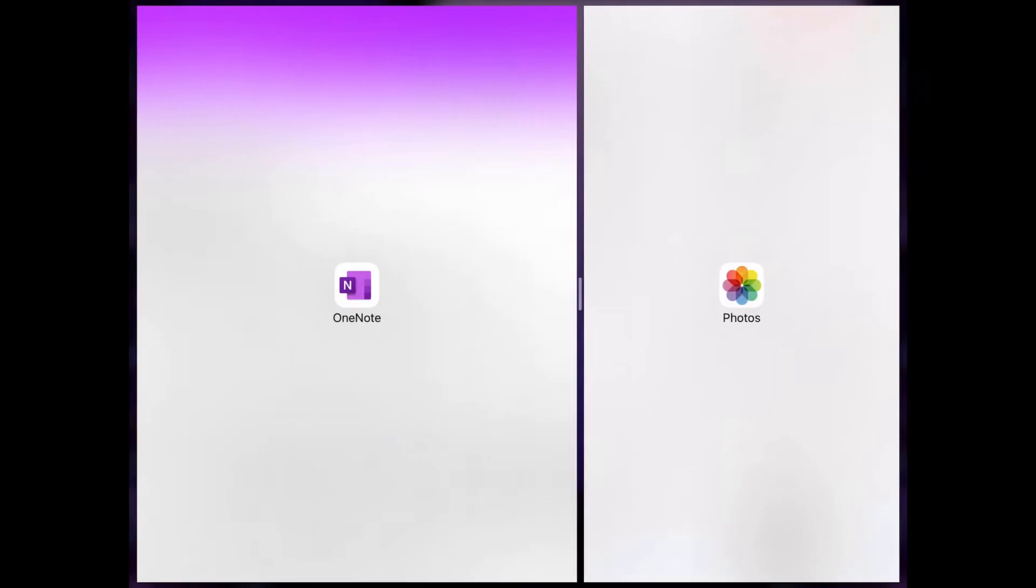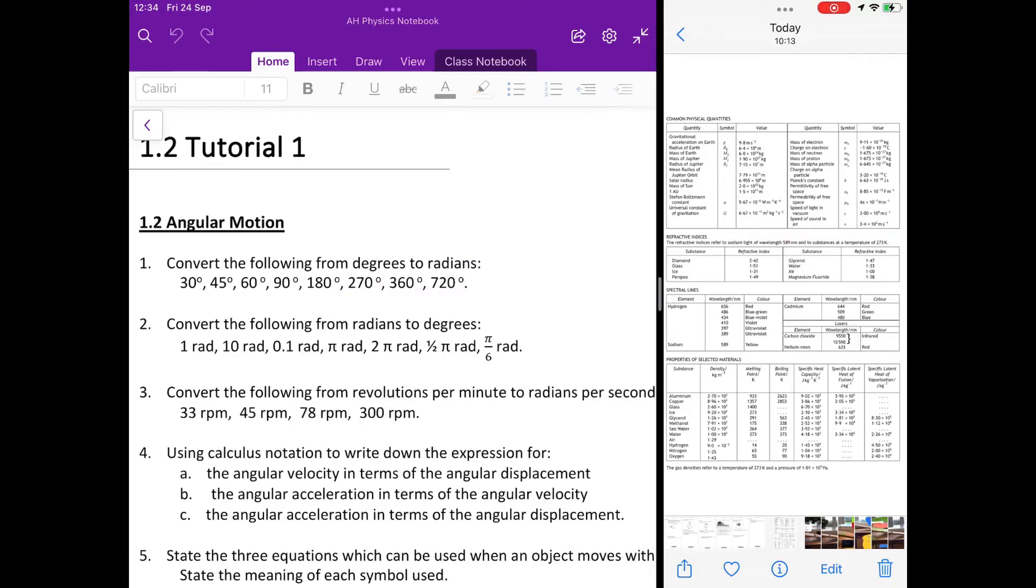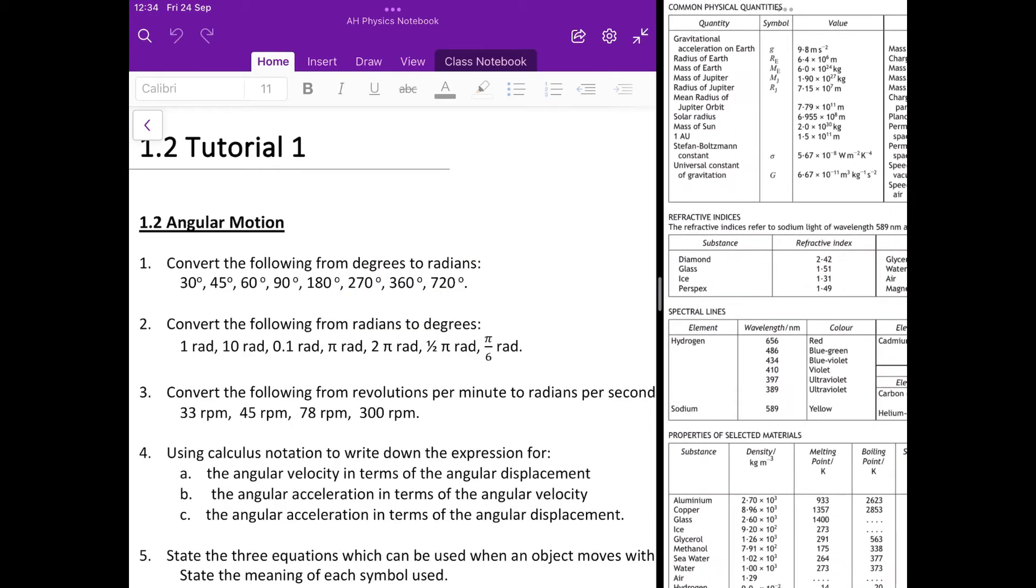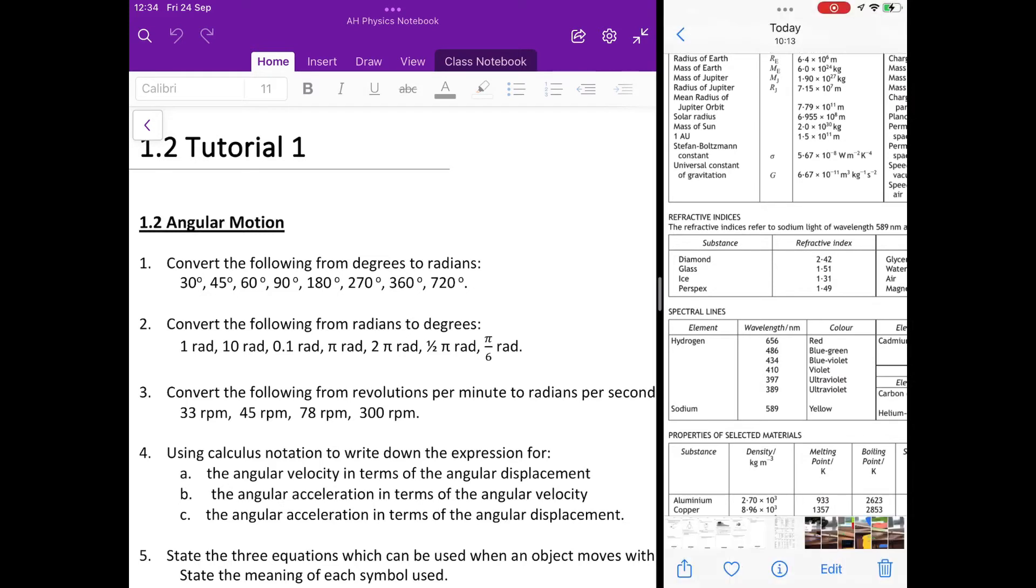Dragging the grey bar in the centre allows you to change the size of the display. And if you look at the top on each side of the split, you will see the three dots that let you change the display settings.